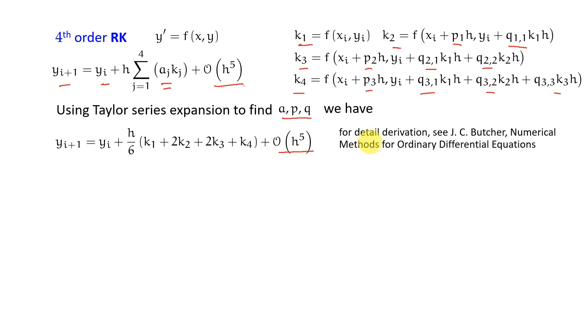The detailed derivation I am leaving for your self-study. You can use this book by J.C. Butcher, a very famous book that introduced something we call the Butcher table, and this Butcher table will give us the exact values of this a, p, and q's for higher and higher order n.